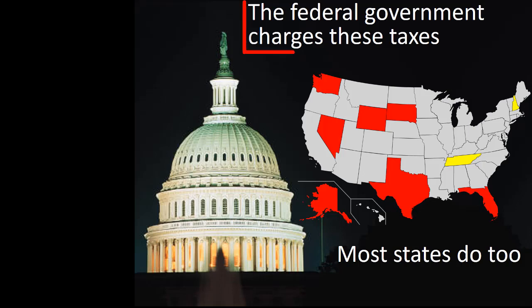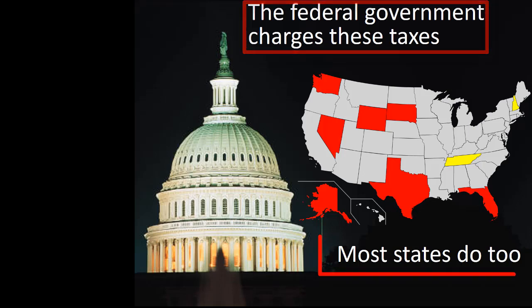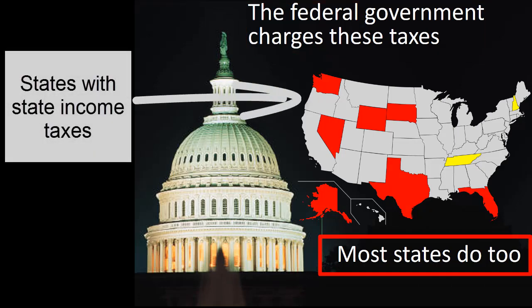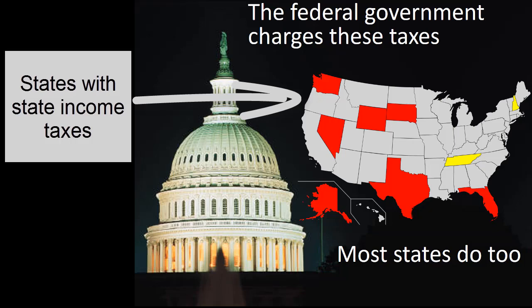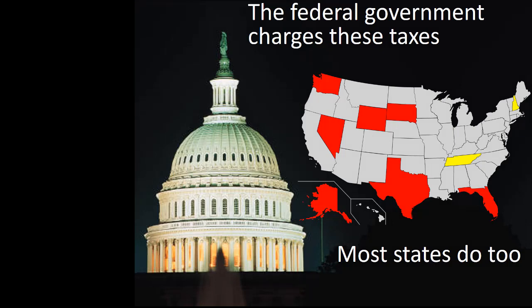Not only does the federal government charge income and capital gains taxes, but most states do as well. Taxpayers in these states pay both federal and state taxes. In some of these states, the state rules for deductions, such as charitable deductions, are identical to the federal rules. Other states reduce this deductibility or provide special incentives for particular types of expenditures. Given the variety of these rules, these lectures will not review the various rules for deductions from state income taxes.